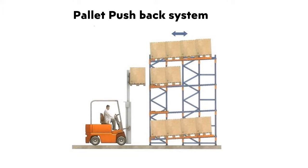Except for the first pallet, the loading of pallets is through MHE push. However, the sequence of pallet availability for unloading is by gravity. For this purpose, the pallet carts are fitted with rollers. This racking has loading and unloading on the same end.